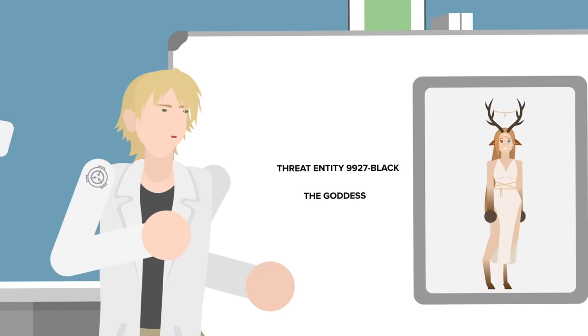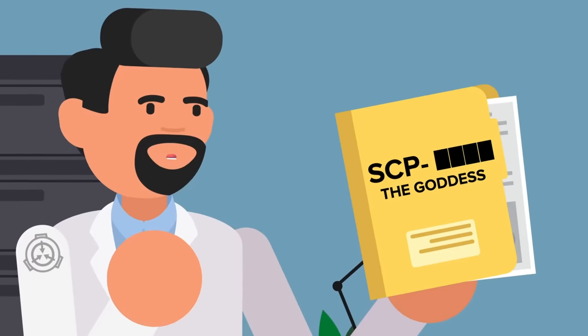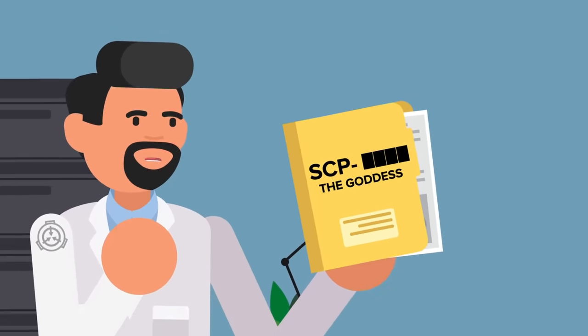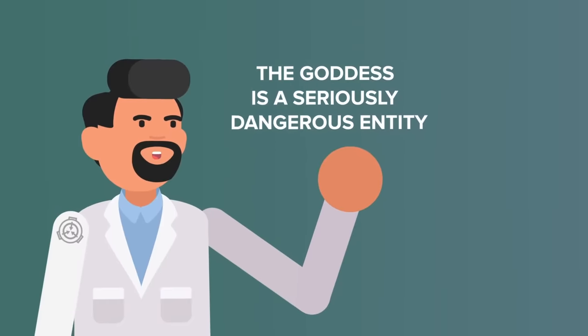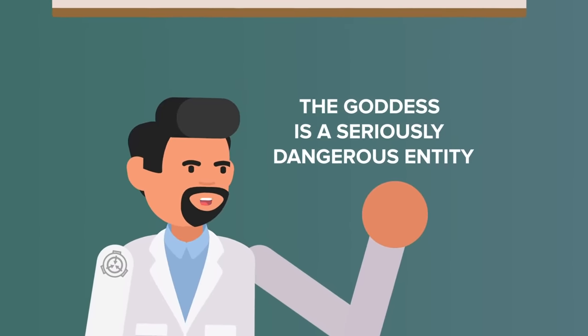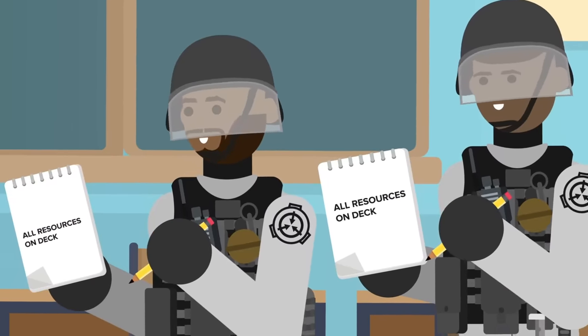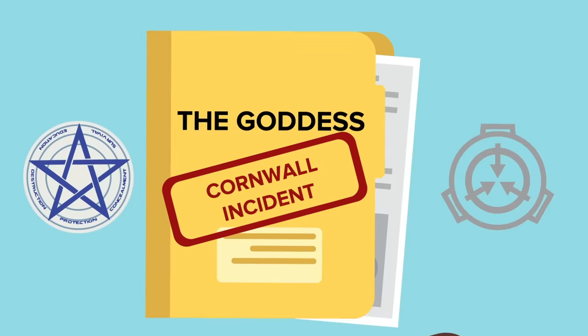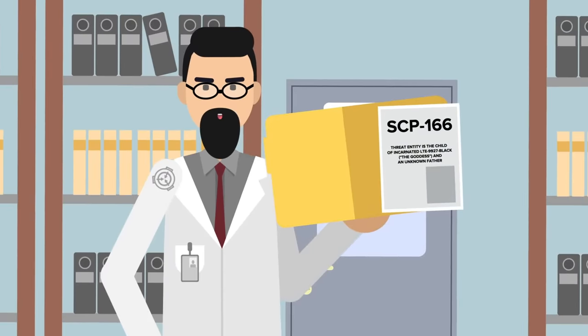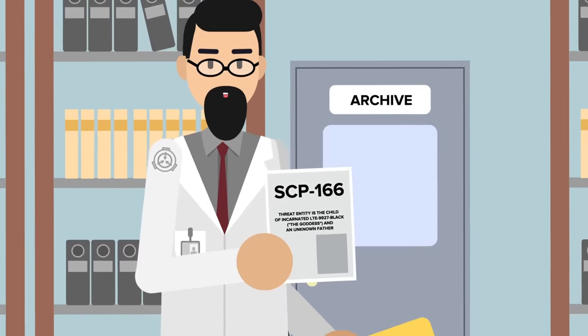He knew that SCP-166 was the child of an incredibly dangerous entity, classified by the Global Occult Coalition as Threat Entity 9927 Black, a being codenamed The Goddess. The Goddess also was being pursued by the SCP Foundation, and given a designation as an SCP object, though its number and the exact details of the file have been redacted by the Foundation for security purposes. What we do know is that the Goddess was a seriously dangerous entity, and both parties were dedicating as many resources as possible to its capture, containment, or neutralization. The conflict between the Goddess, the Global Occult Coalition, and the SCP Foundation came to a head during an event known as the Cornwall Incident.